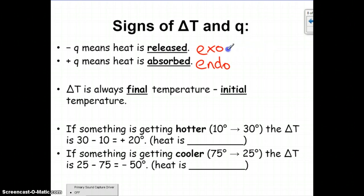Remember, thinking about going this way, you're thinking about going down, and this one you're thinking about going up the heat curve. Delta T is always going to be final minus initial temperature. If something is getting hotter, going from 10 to 30 degrees, the delta T is going to be 30 minus 10, which is positive 20, so the heat is absorbed.